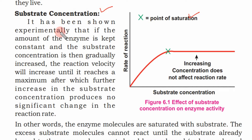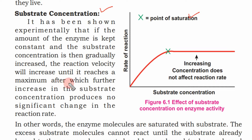It has been shown experimentally that if the amount of the enzyme is kept constant and the substrate concentration is then gradually increased, the reaction velocity will increase until it reaches a maximum, after which further increase in the substrate concentration produces no significant change in the reaction rate.